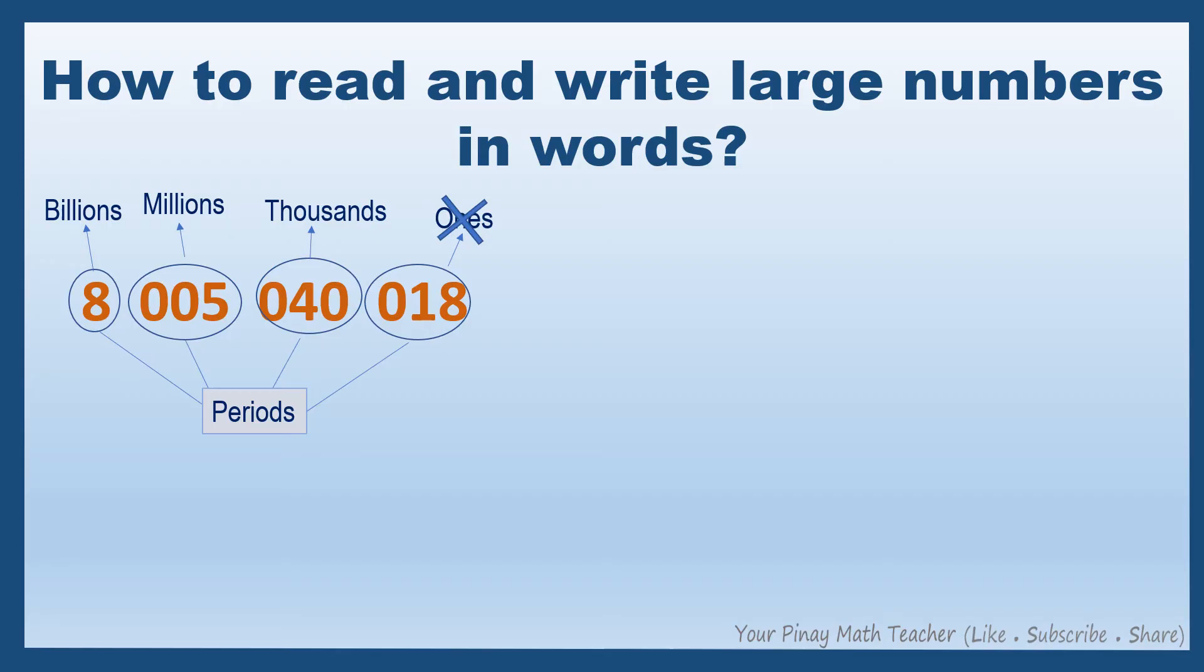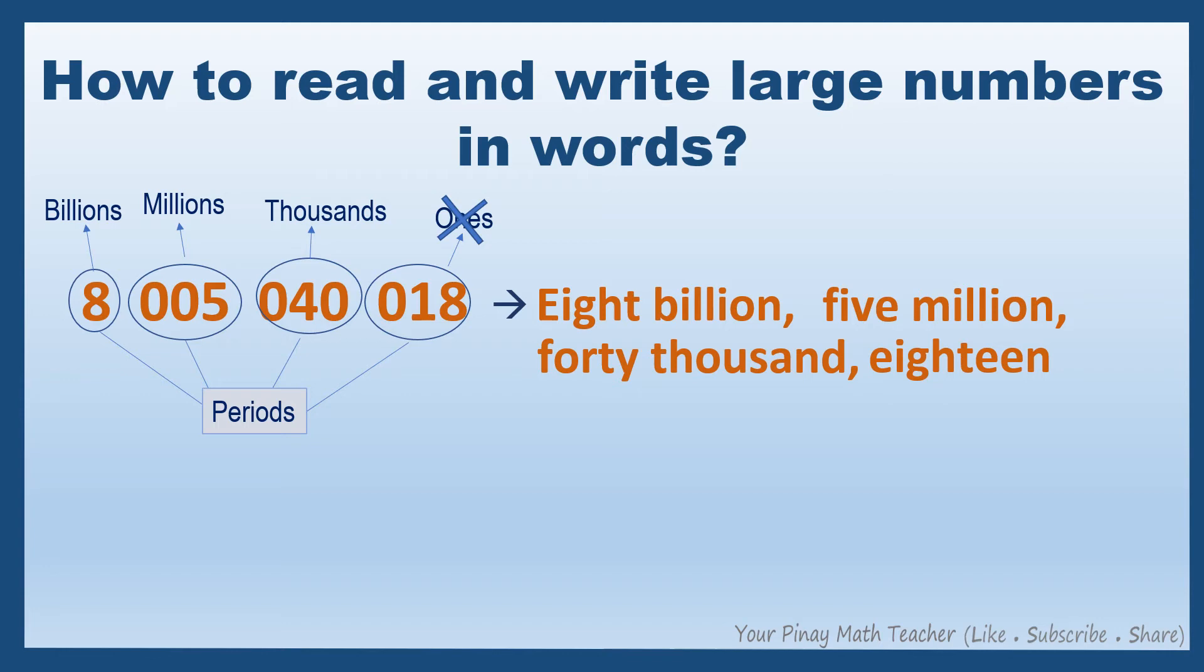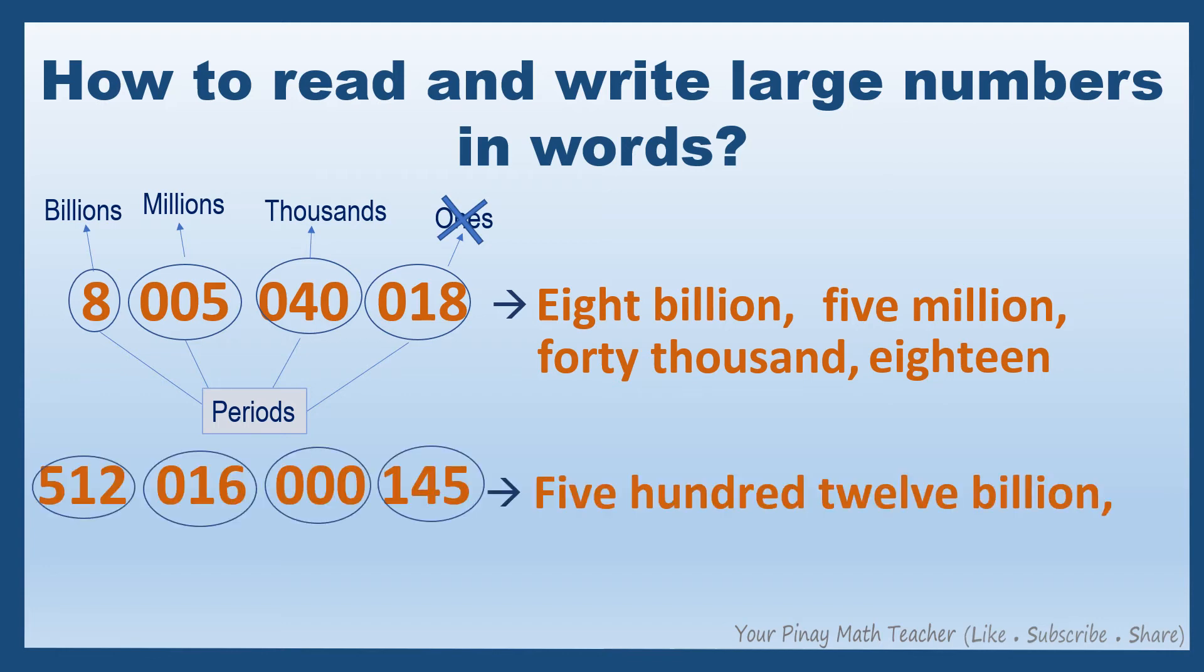Again, the ones period should not be mentioned as you read the number. So this is 8,005,040,018. Another example, 512,016,0145.